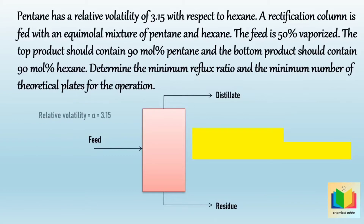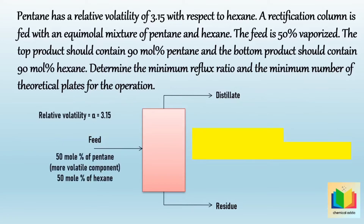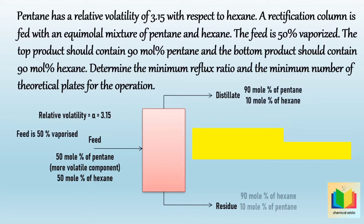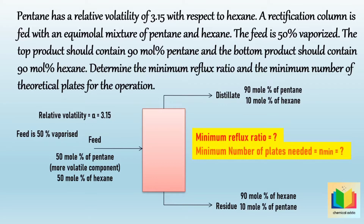Pentane has a relative volatility of 3.15 with respect to hexane. A rectification column is fed with an equimolal mixture of pentane and hexane, meaning the feed contains 50% pentane and 50% hexane. The feed is 50% vaporized. The top product should contain 90 mole percent pentane and the bottom product should contain 10 mole percent hexane, meaning the bottom product contains 90% pentane. Determine the minimum reflux ratio and the minimum number of theoretical plates for the operation.